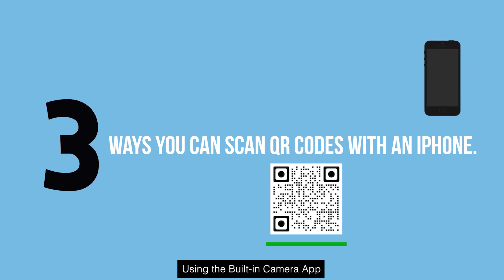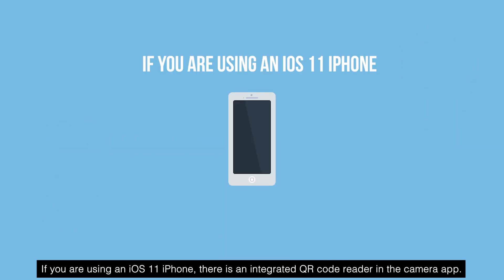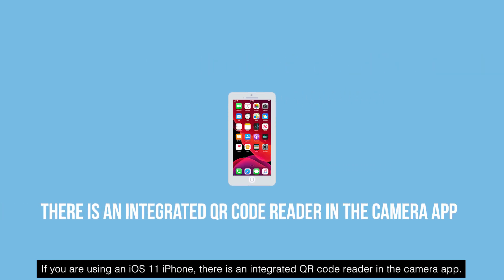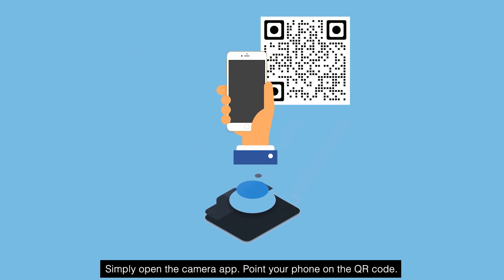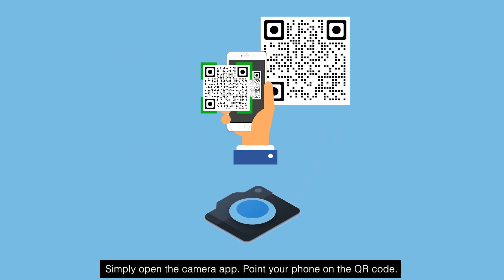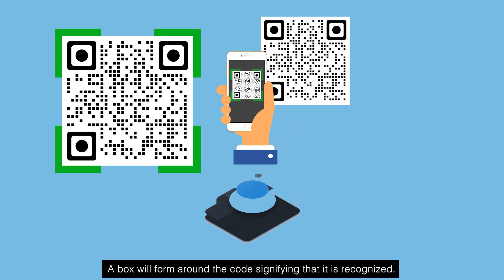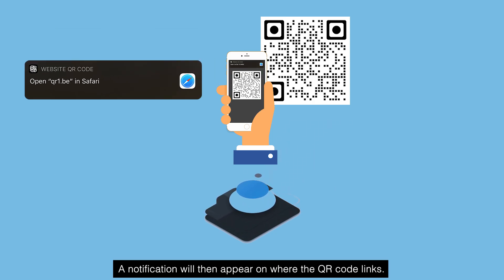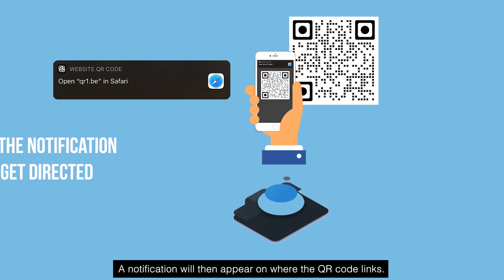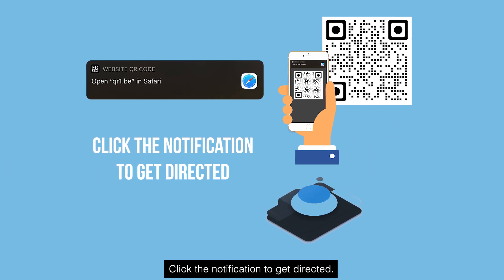Using the built-in camera app: if you are using an iOS 11 iPhone, there is an integrated QR code reader in the camera app. Simply open the camera app and point your phone on the QR code. A box will form around the code signifying that it is recognized. A notification will then appear showing where the QR code links — click the notification to get directed.